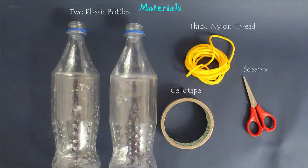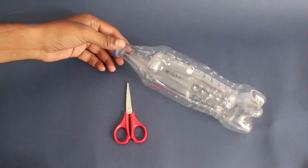To make this dynamic toy you need two strong conical bottles, thick nylon thread, sellotape, and scissors.